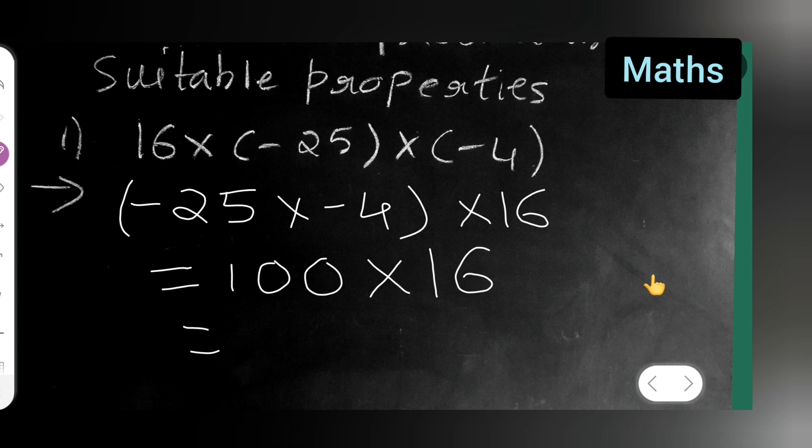Now what I will have to do is I will have to only add two zeros for this 16: 1600. So I hope you all have understood how to find the product using suitable properties. Thanks for watching.